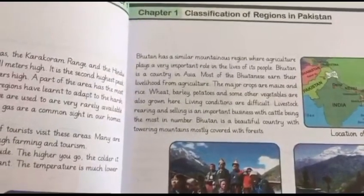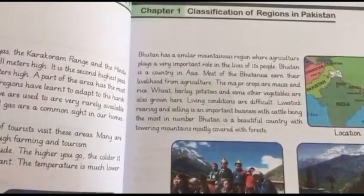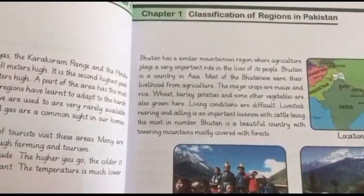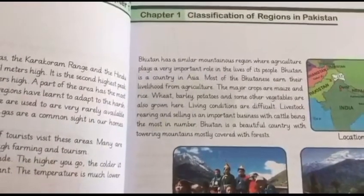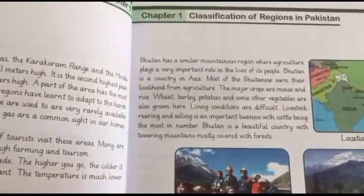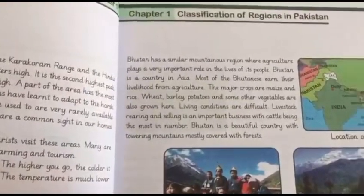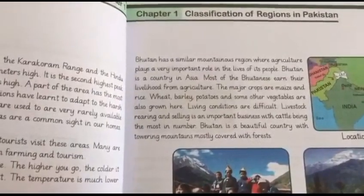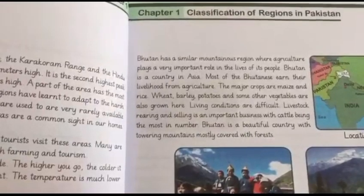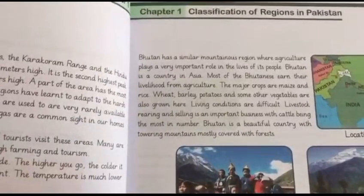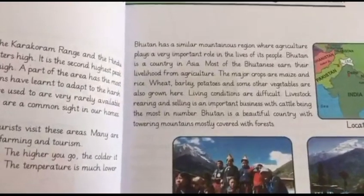The major crops grown in Bhutan are maize (corn), rice, wheat, barley, potatoes, and other vegetables. They sell these crops to other parts of the country. Living conditions are difficult, as people in the mountainous region are not provided with all the facilities that people on plain areas enjoy. They face difficulty getting clean drinking water and traveling, as mountain roads are not even like those on plain areas.